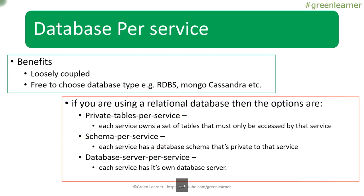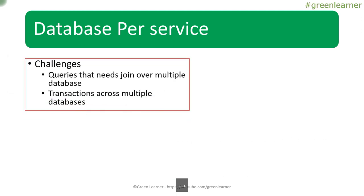Now let's talk about some challenges with the database per service pattern. First is that queries may need joins over multiple databases — when a user requests specific data, you may need real-time joins across tables associated with different microservices. Second is about transactions. In a monolithic architecture with a single database server, it was easy to join tables and manage transactions. But in microservices architecture, these become unique challenges.